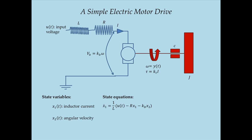Moving on to the state equation for the second state variable, angular velocity: the rate of change of angular velocity is angular acceleration, and inertia times angular acceleration equals the summation of torques. So X2-dot equals (1/J) times the sum of torques. There are two torques acting on this inertia: the motor torque K_T times X1 trying to accelerate it, and the damper torque C times X2 trying to slow it down. So X2-dot equals (1/J) times [K_T·X1 minus C·X2]. The output equation is simply Y equals X2, since angular velocity is my second state variable.